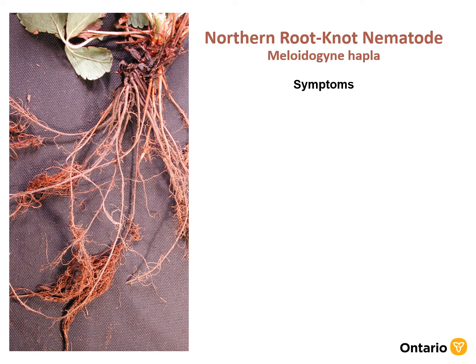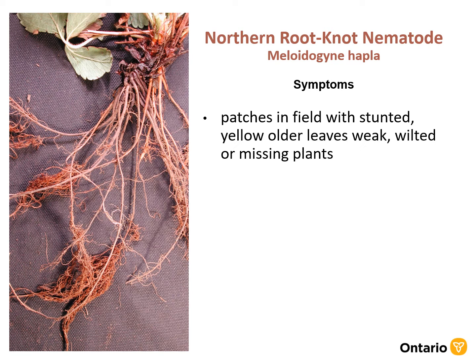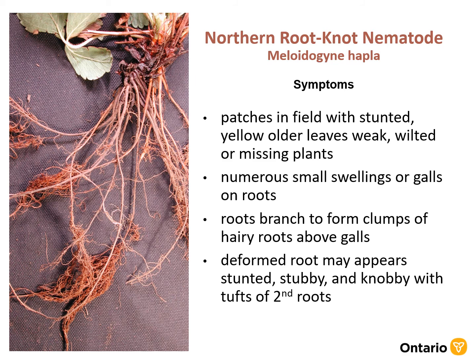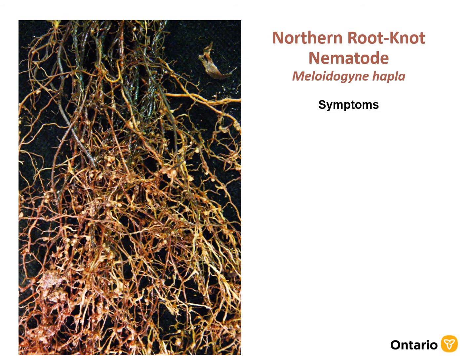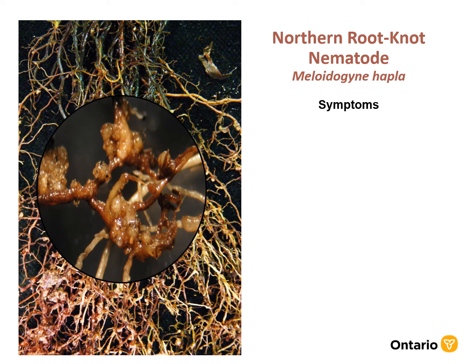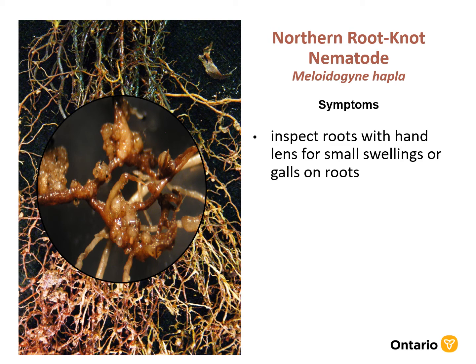Root-knot nematodes will cause patches in the field with stunted yellow older leaves and weak and wilted plants. If you dig the plant up, you will see swellings or galls on the roots and tufts of secondary roots. Here is a close-up of the swellings or galls you may see. If you suspect nematodes or find this damage, you can send a soil sample to a lab for diagnosis. The threshold for root-knot nematodes is 1,000 per kilogram of soil.